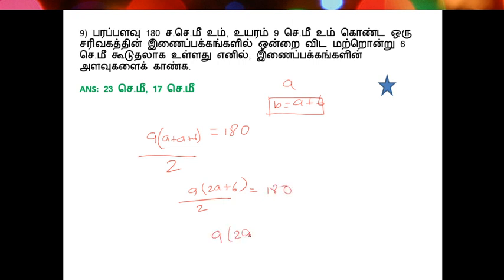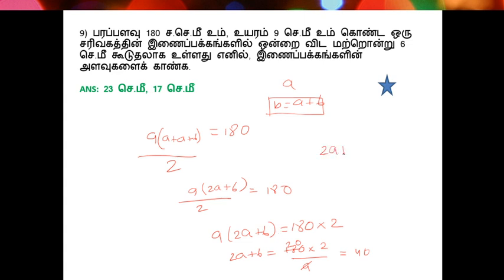2a plus 6 is 180. Now, if you are working it out, you can answer: 2a plus 6 is 180. If you want to add: 90 is equal to 20. Then 1a plus 6 is equal to 60, so 2a plus 6 is equal to 60.